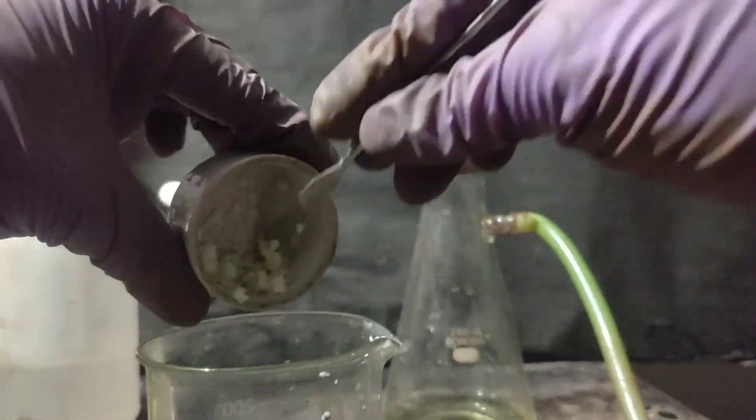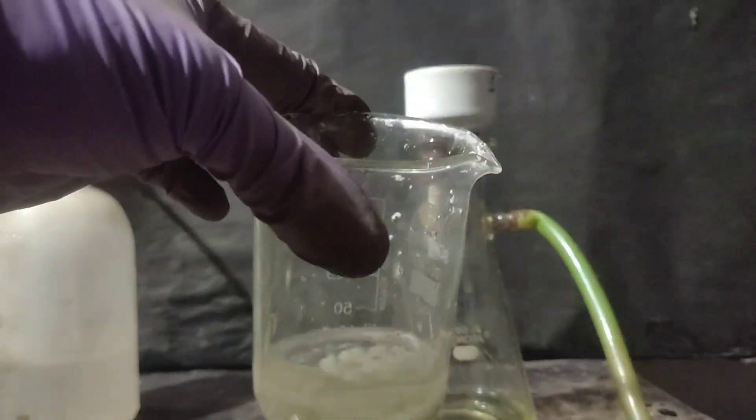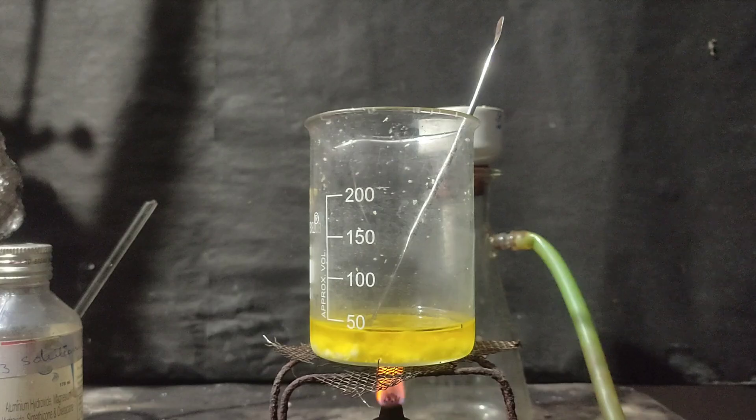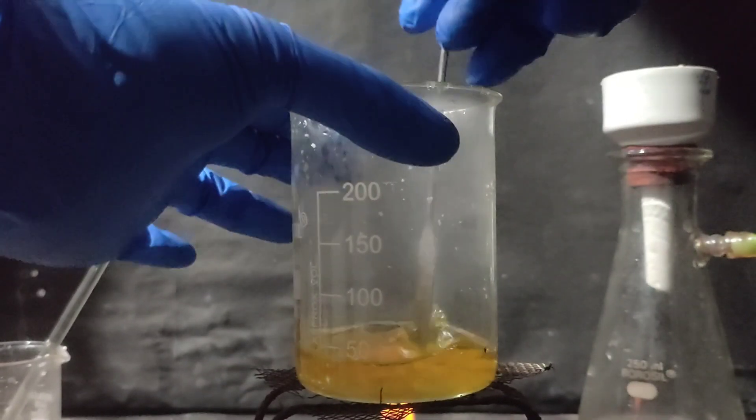Then the precipitate was transferred to a beaker and washed with sodium bicarbonate solution. The solution was heated and stirred to wash away acids, cooled, and filtered.